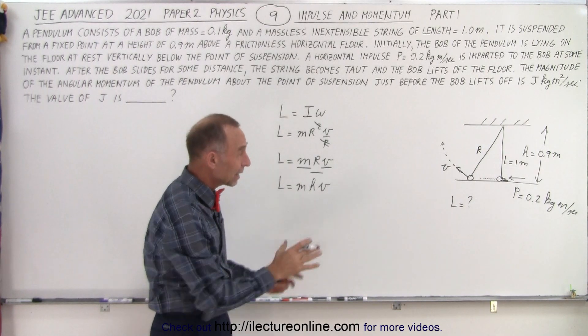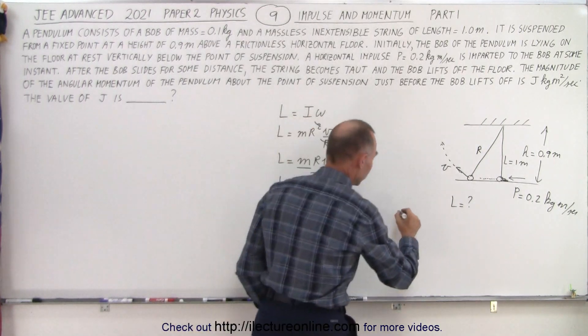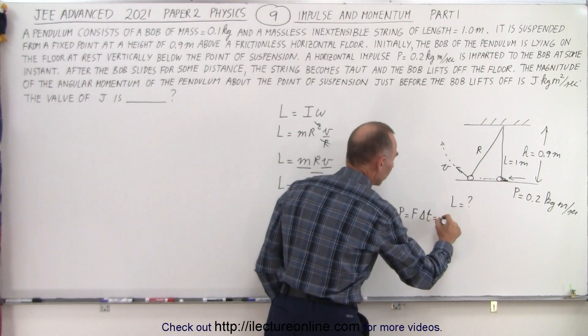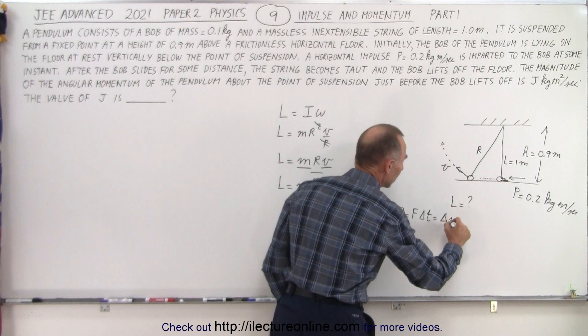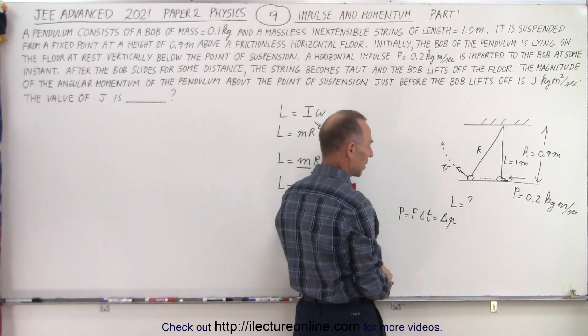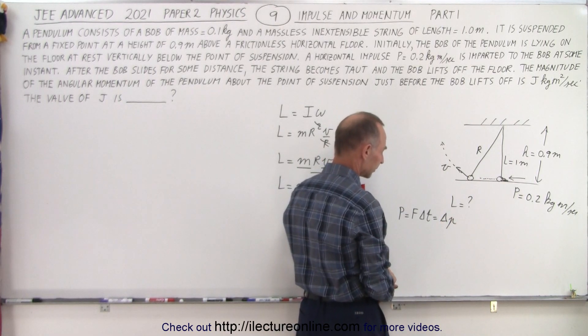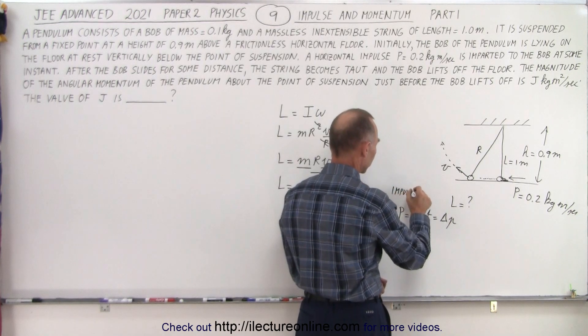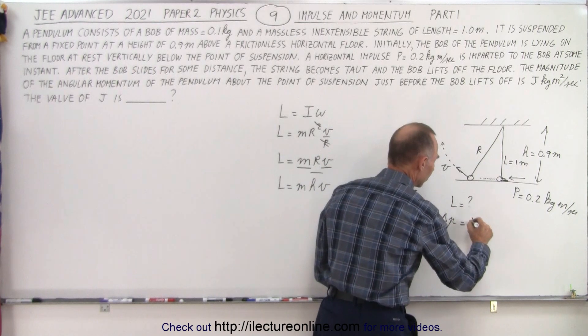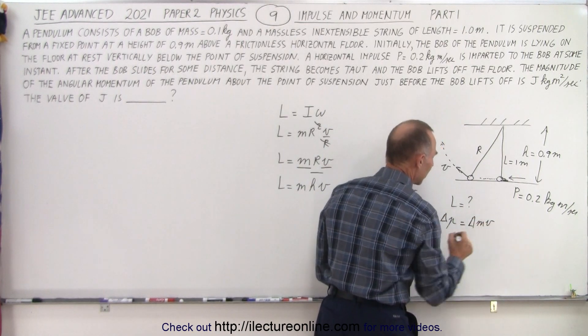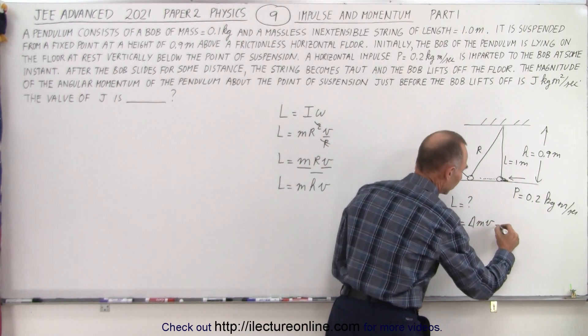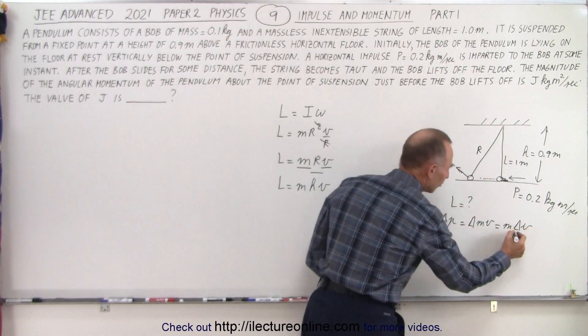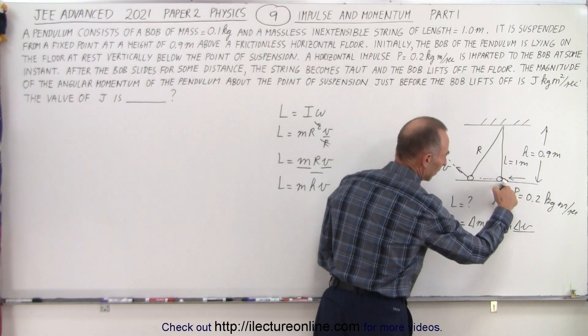We also need to know v and that comes from the impulse. By definition the impulse is equal to force times delta t or it's equal to the change in momentum. I use small p for momentum linear momentum, big P for the impulse so we don't get confused. That is equal to the change in m times v. The mass isn't changed so this is equal to m times the change in v.